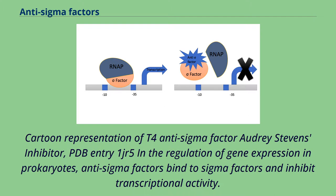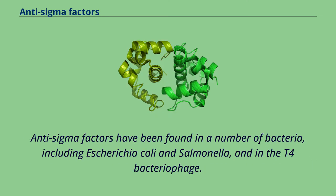Cartoon representation of T4 anti-sigma factor Audrey Stevens inhibitor, PDB entry 1JR5, in the regulation of gene expression in prokaryotes. Anti-sigma factors bind to sigma factors and inhibit transcriptional activity. Anti-sigma factors have been found in a number of bacteria, including Escherichia coli and Salmonella, and in the T4 bacteriophage.